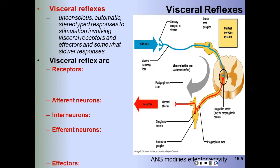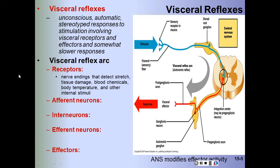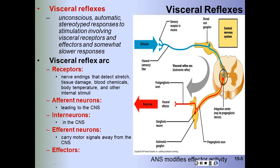When we look at the visceral reflex arc, we have certain components: receptors, afferent neurons, interneurons, efferent neurons, and effectors. The receptors are nerve endings that detect stretch, tissue damage, blood chemicals, body temperature, and other internal stimuli. The afferent neurons lead to the CNS; the interneuron lies within the CNS; the efferent neurons carry motor signals away from the CNS; and the effectors make the adjustments for a proper response.